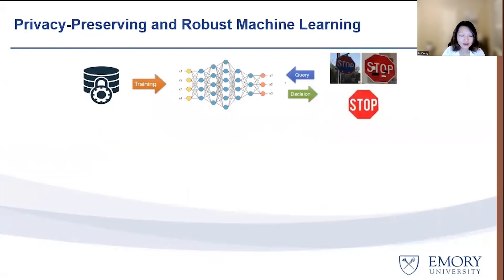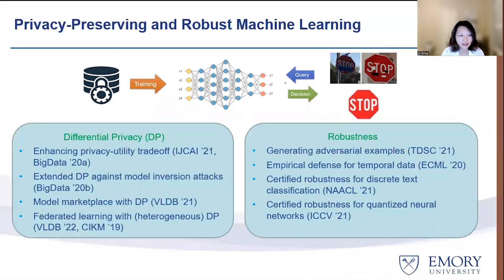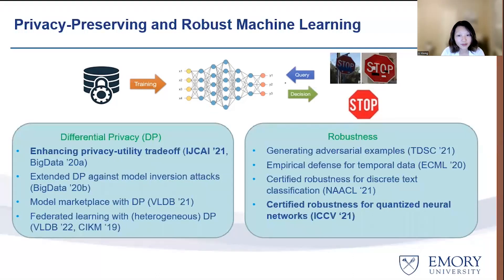To combat this, it requires us to build machine learning algorithms that ensure rigorous privacy protection for training data, and also to build robust machine learning algorithms that can resist adversarial examples or poisoned data and still give a correct or stable prediction for manipulated input data or models trained on poisoned data. We did some work applying differential privacy to model training, and we also studied robustness, including both empirical approaches and more theoretical certified robustness approaches. For today's talk, I will briefly introduce two works: the first aims to enhance the utility-privacy trade-off of models trained with differential privacy, and the second aims to ensure certified robustness for quantized neural networks.